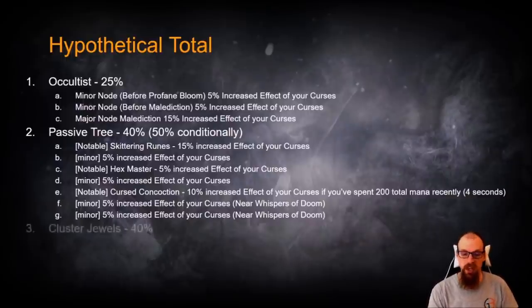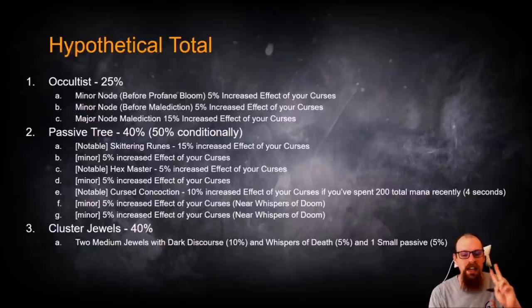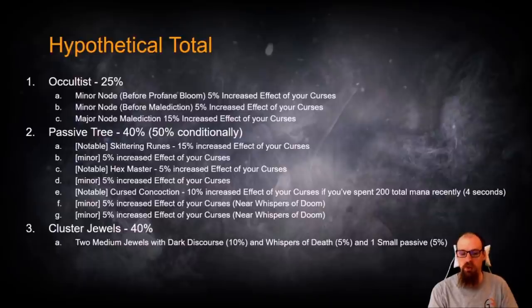This totals up to 40%. Then we start adding in some Cluster Jewels. Now, again, this is just with the hypothetical scenario of adding in two Medium Cluster Jewels. That doesn't require you to have a Voices, it just requires you to have a large jewel that has two sockets. Incredibly dirt cheap, this league.